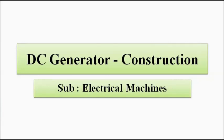In this video we are going to focus on the constructional features of a DC generator. When an electrical machine is assembled, it is not fixed whether it will be used as a motor or a generator. If we reverse one it becomes the other — electrical to mechanical is a motor, mechanical to electrical is a generator. So it is reversible, and both motor and generator will have the same constructional features.